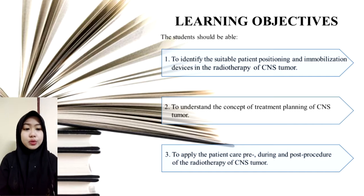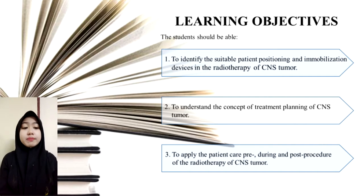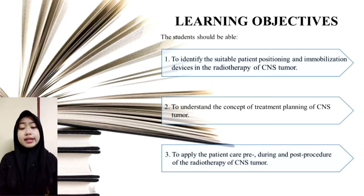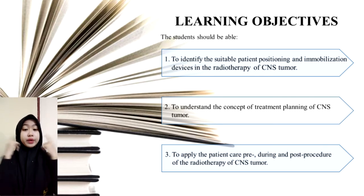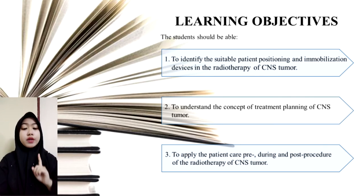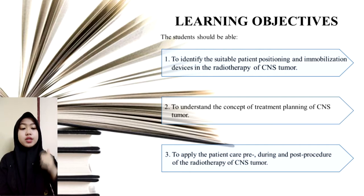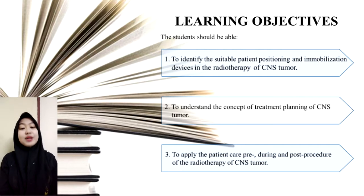Secondly, the student should be able to understand the concept of treatment planning of CNS tumors. As we know, CNS involves two major areas: the cranium and the posterior spine irradiation. Therefore, the student should be able to define the GTV, CTV, PTV, organ at risk, beam arrangement, and dose description.